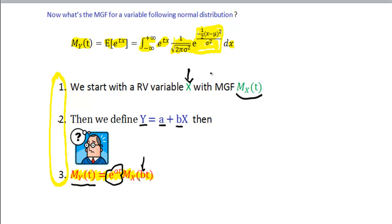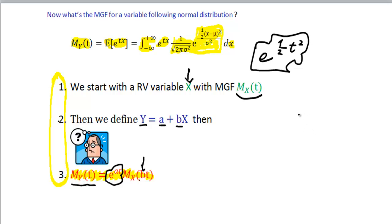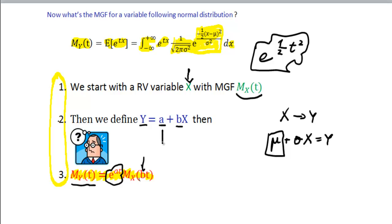The moment generating function of the standard normal variable was e^(½t²). And if we recall how we get from X to Y: Y = μ + σX, so μ here is our constant a and σ is our constant b. This is a perfect example of how we can use this key result to find the MGF for the normal distribution.